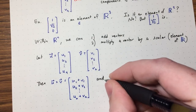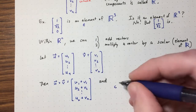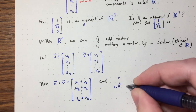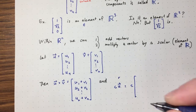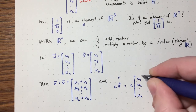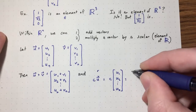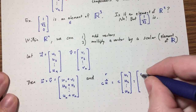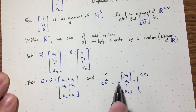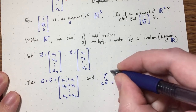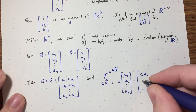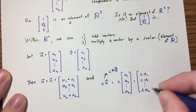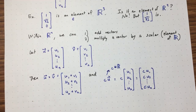What does scalar multiplication look like? For a scalar C times vector U, you get another vector by multiplying every component by C: Cu1, Cu2, and so on. We can do this because C is a real number and each component is a real number — so it's just real numbers times real numbers.